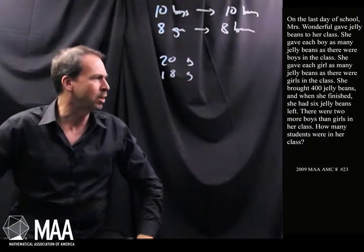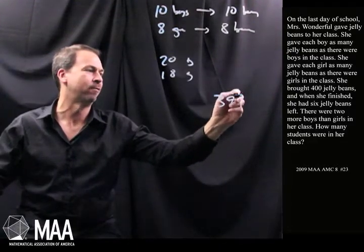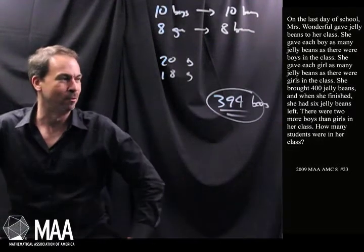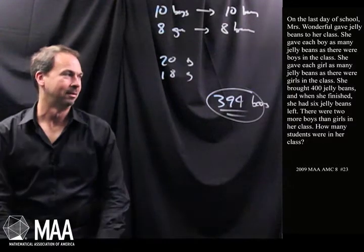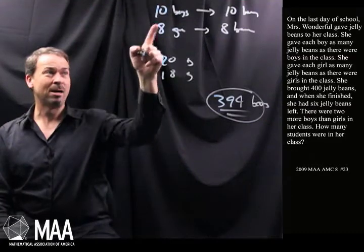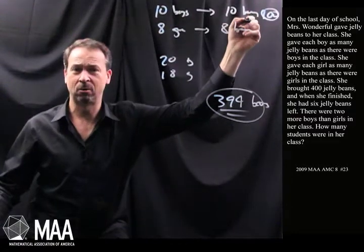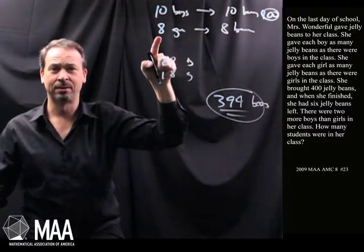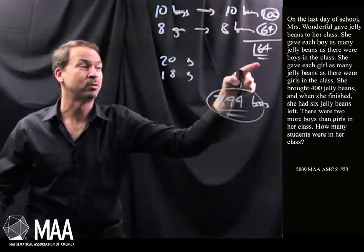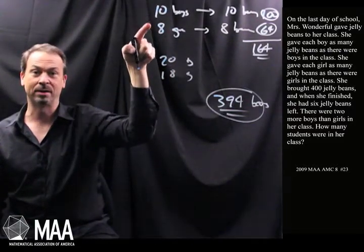She bought 400 jelly beans, but when she finished there were 6 jelly beans left. So actually she only ever used 394 beans. Apparently, knowing this 394 beans is enough to tell me how many students there are in that class. If there were 10 boys, 10 boys each get 10 beans — that's 100 beans total. And 8 girls each getting 8 beans — that's 64 beans. There would be a total of 164 beans, which is way too small. We're meant to get 394 beans. So I could just try guessing some numbers.